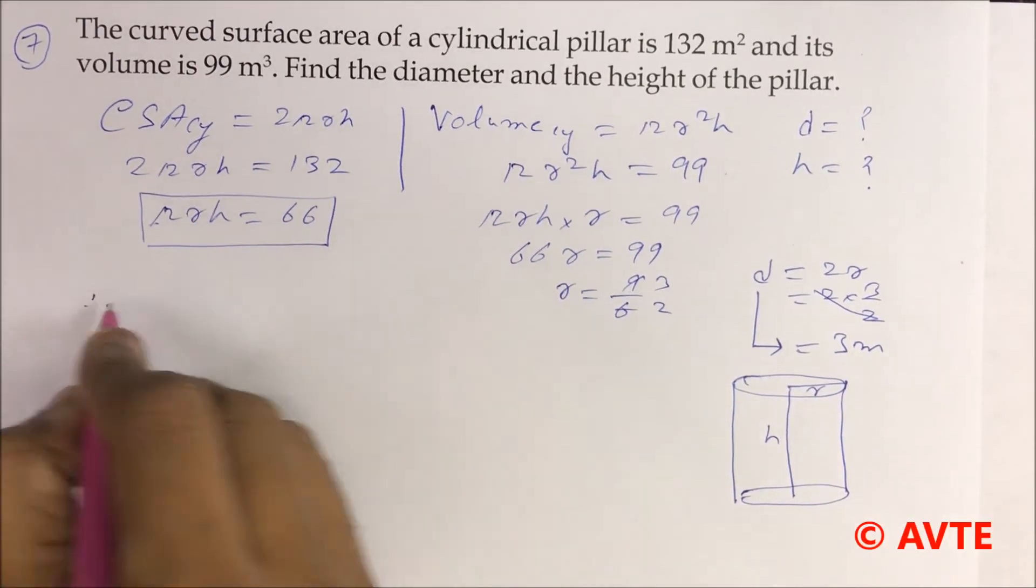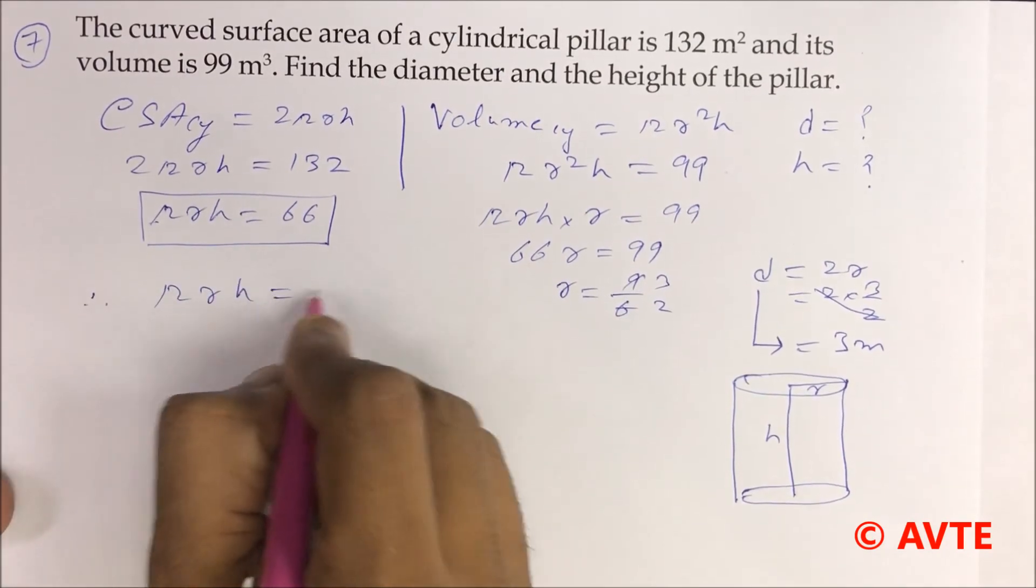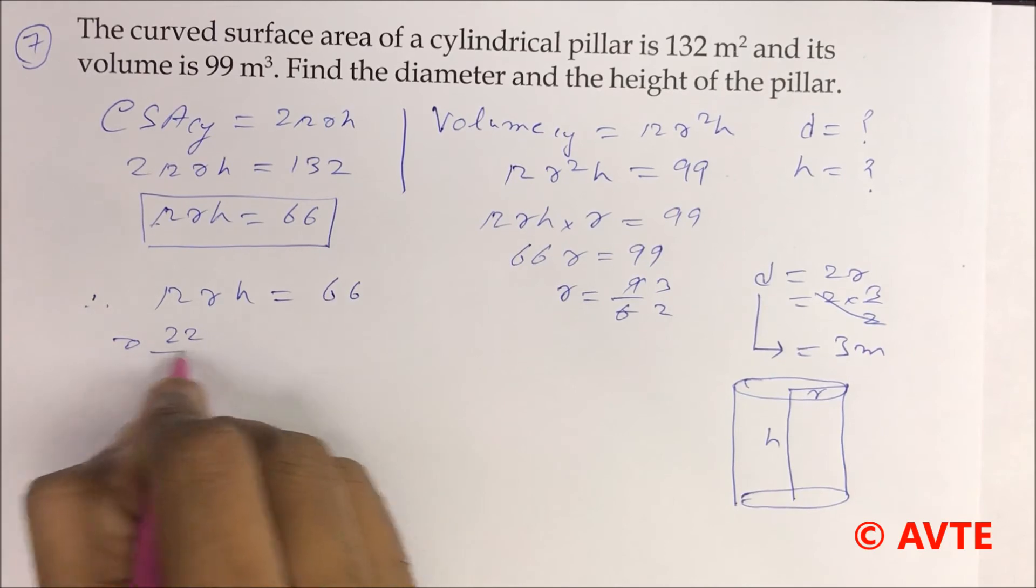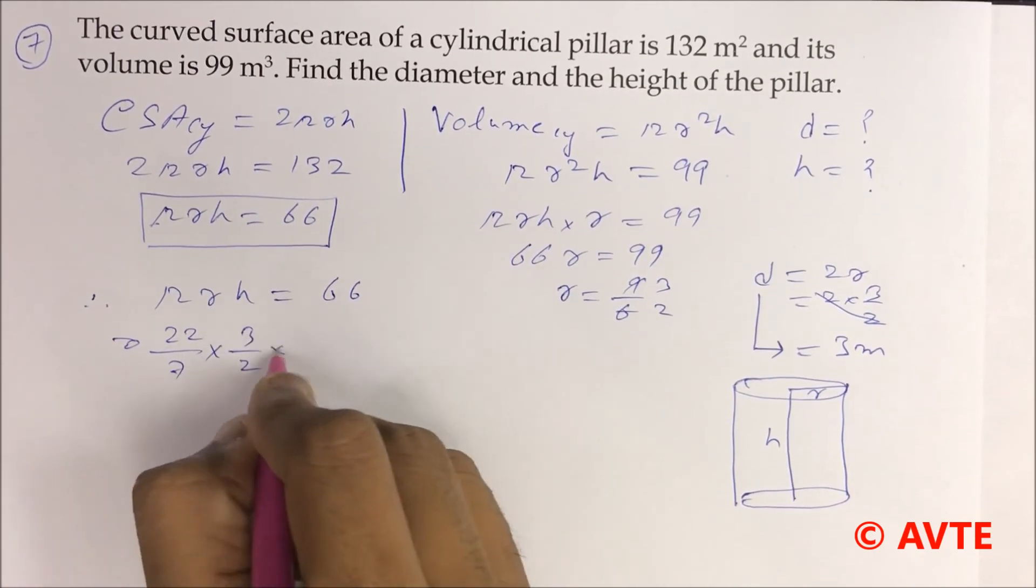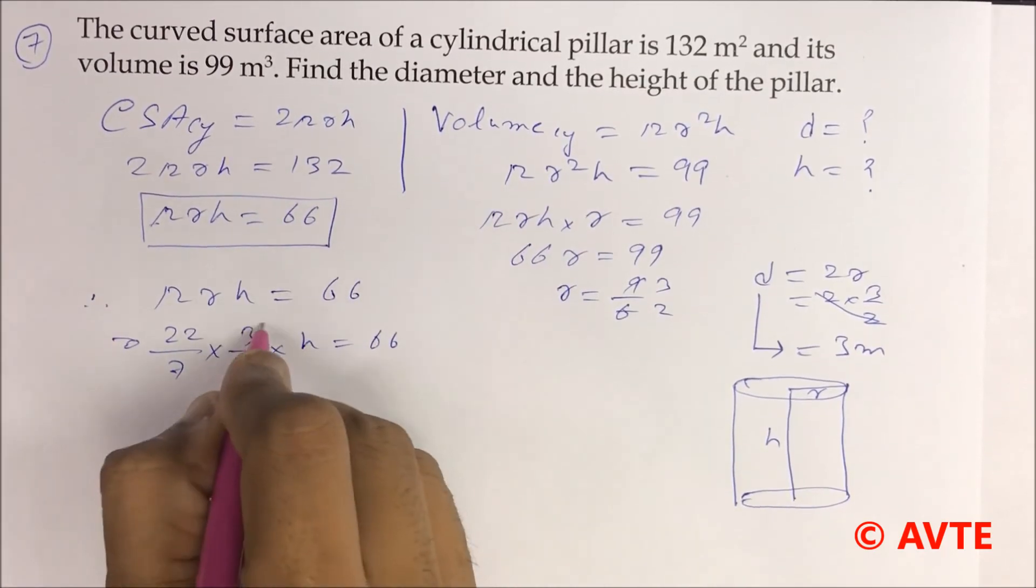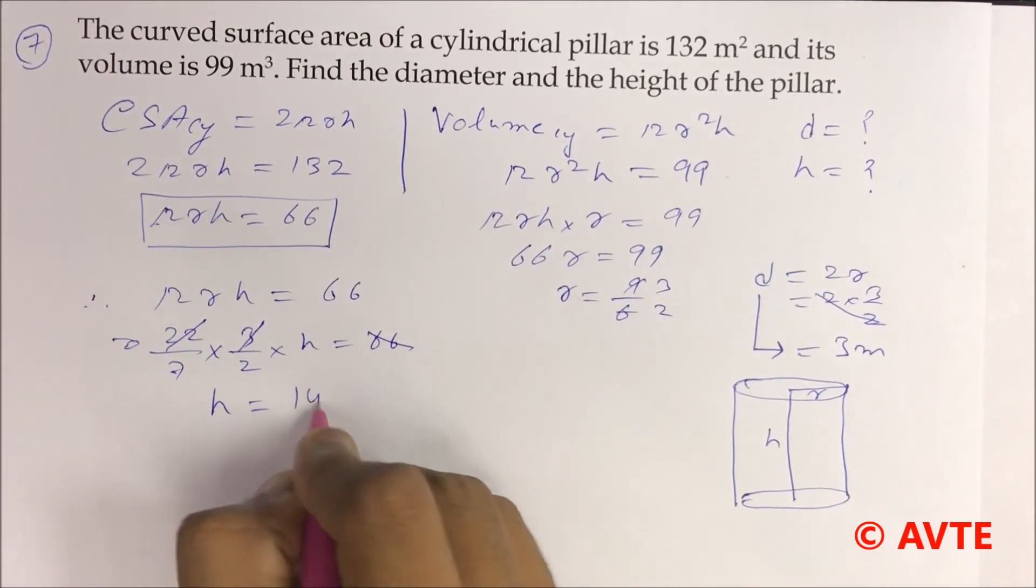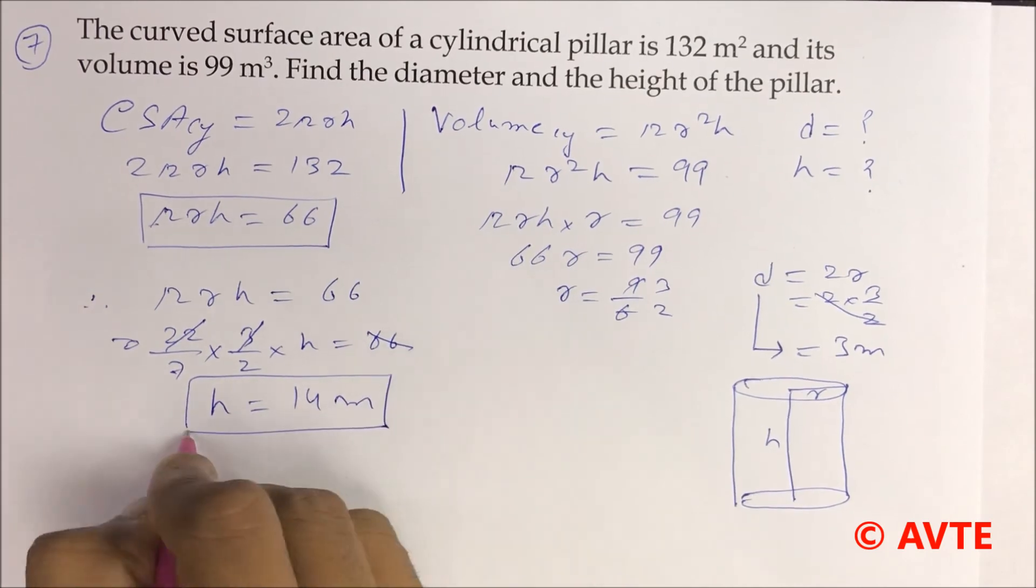We know that πrh is 66 and r is 3/2. So 22/7 times 3/2 times h equals 66. Since 22 times 3 is 66, then h is 14 meters.